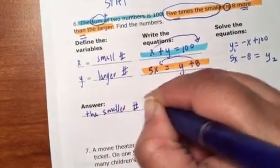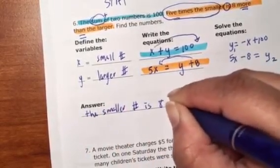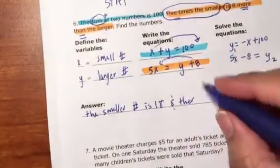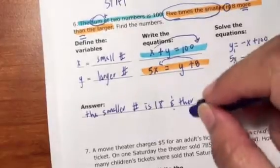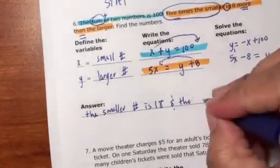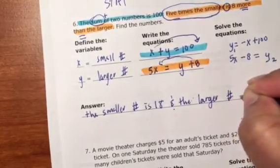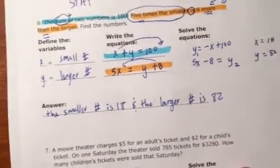So your answer would be the smaller number is 18, and the larger number is 82.